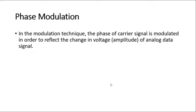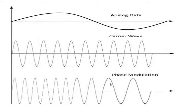In phase modulation, the phase of the carrier signal is modulated in order to reflect the change in voltage or amplitude of the analog data signal.